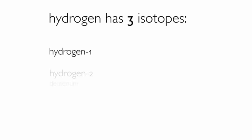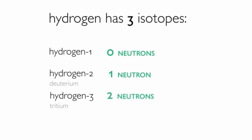Hydrogen-1, hydrogen-2 also called deuterium, and hydrogen-3 also known as tritium are the three isotopes of hydrogen. They have 0, 1, and 2 neutrons respectively.